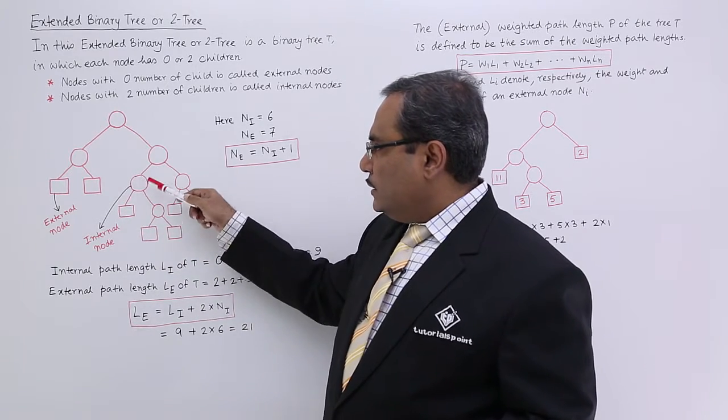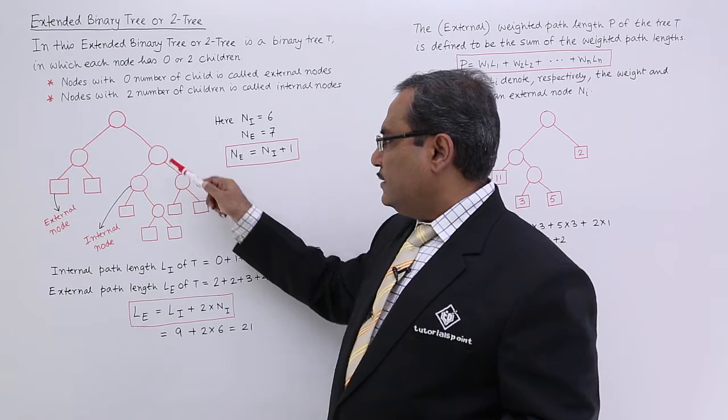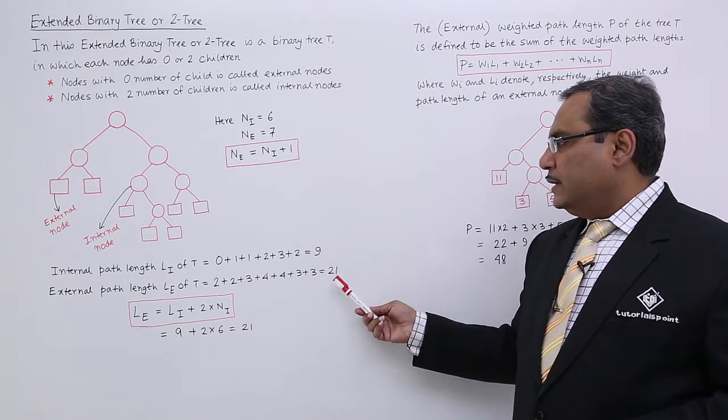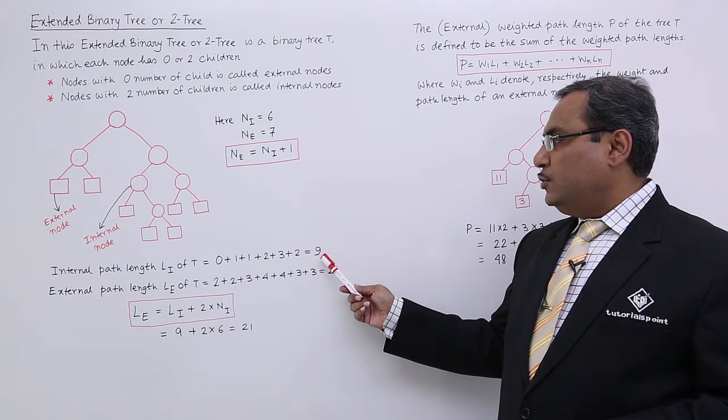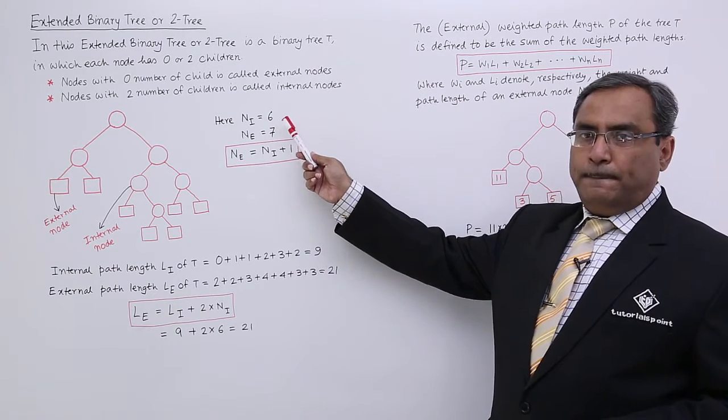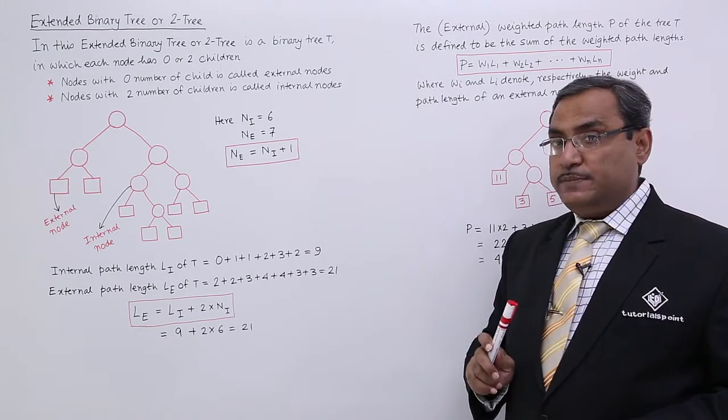this one is 3, this one is 4, this one is 4, and this is 3 and this is 3 again. So if you go on adding you are getting 21.